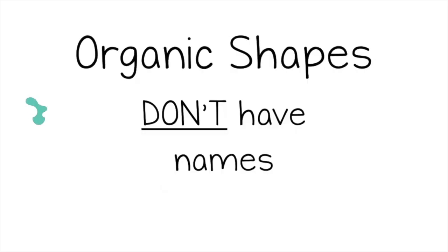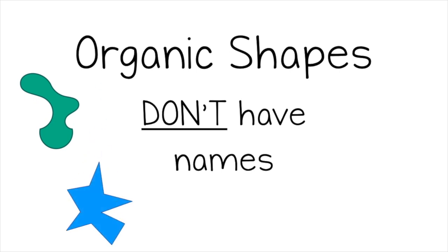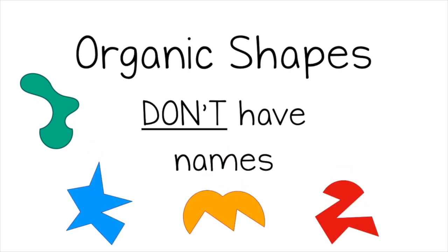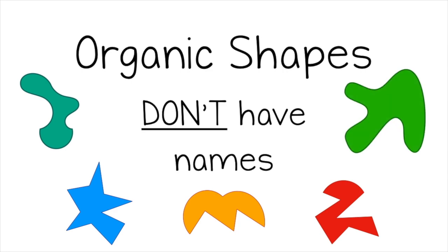The second group of shapes are shapes that we normally find in nature. These shapes are called organic shapes. Organic shapes don't have names. You'll see shapes that have curves and points and flat sides, but these shapes won't have specific names.